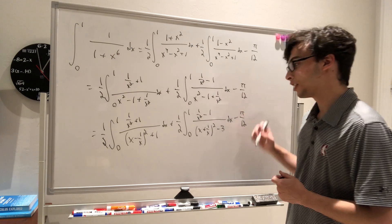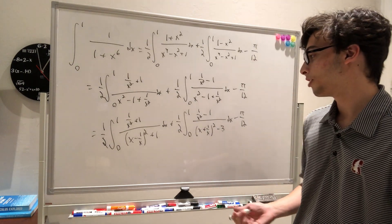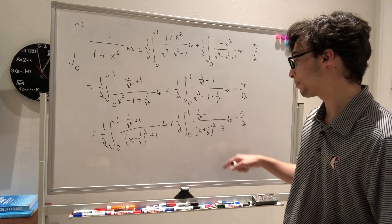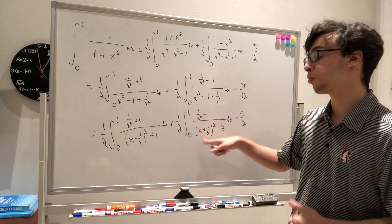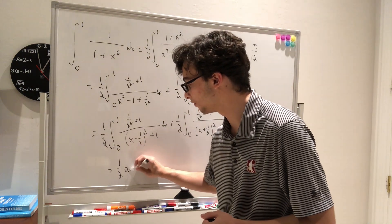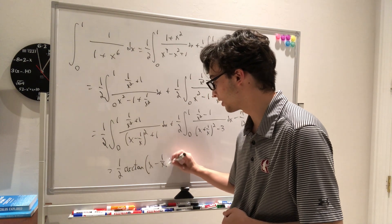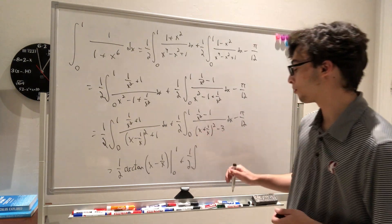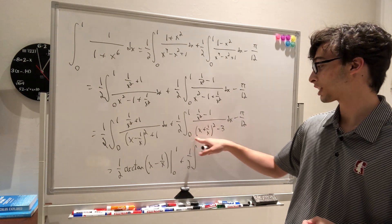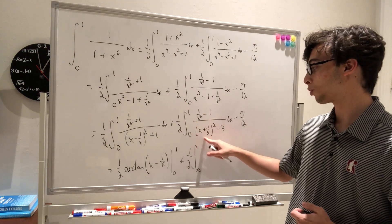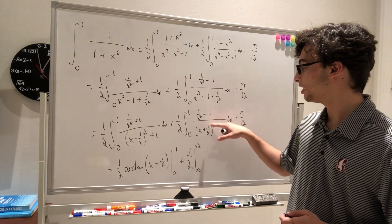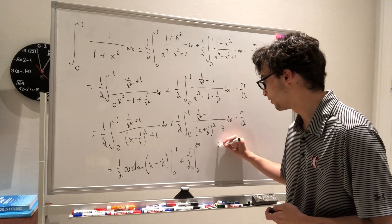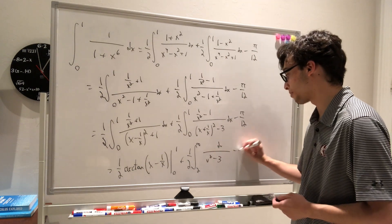So we still have minus pi over 12. We can go ahead with a substitution, or just straight integrate these. For the first, the integral is arctangent of (x minus 1 over x), since the numerator is the derivative of the inside. For the second part I'll do a u-sub: u equals x plus 1 over x. This equals one half arctangent of (x minus 1 over x) evaluated from 0 to 1, plus one half integral. Changing the bounds: when u equals x plus 1 over x, plugging in 0 gives infinity, and plugging in 1 gives 1 plus 1 over 1, which is 2. The numerator becomes negative du, so we flip the bounds to get the integral from 2 to infinity of du over (u squared minus 3).